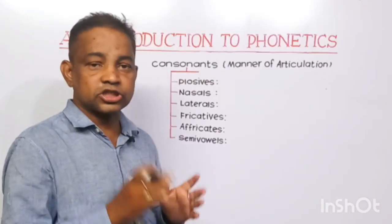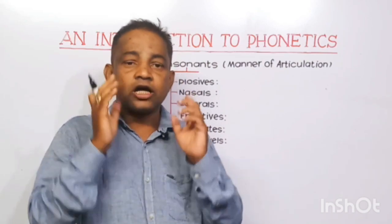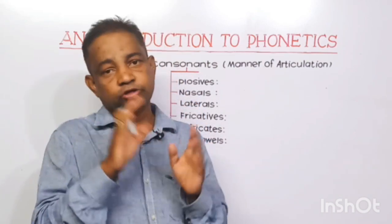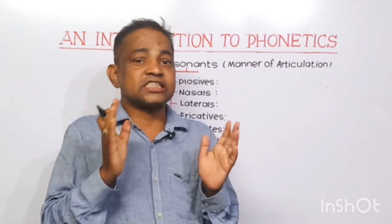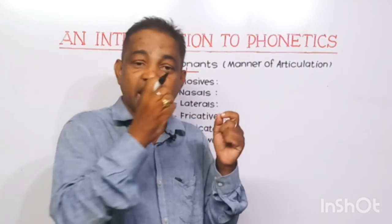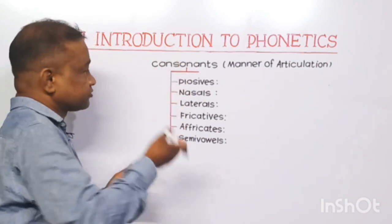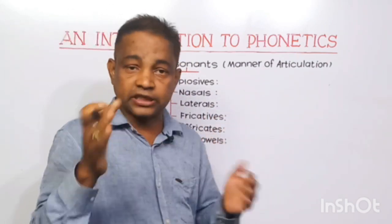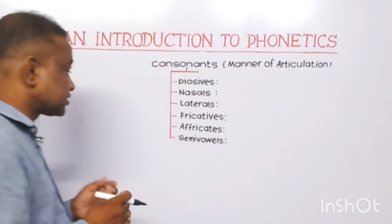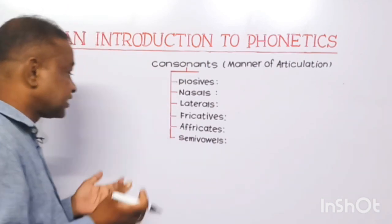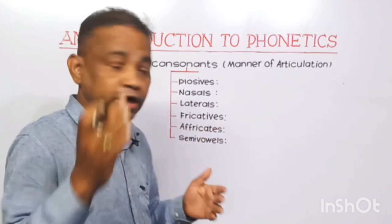Let us discuss consonants. What do you mean by consonant? The word 'consonant' comes from a Greek term which means 'sound together' — that means a consonant sound cannot be produced without the help of vowels. I have classified consonants into six classes according to manner of articulation: plosives, nasals, laterals, fricatives, affricates, and semivowels.